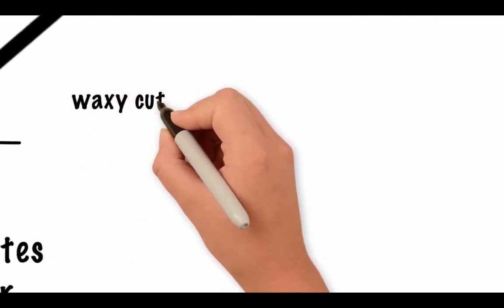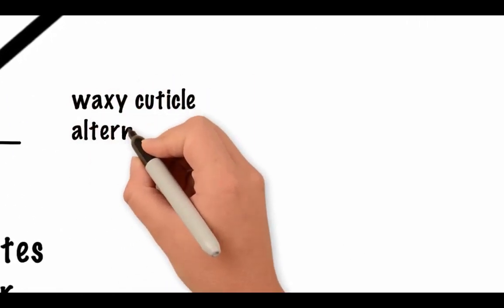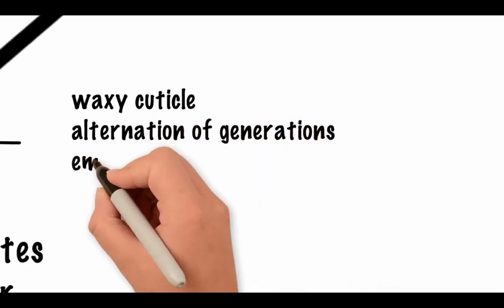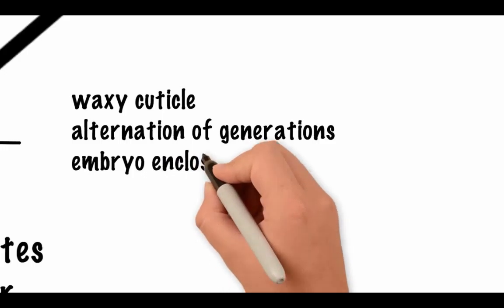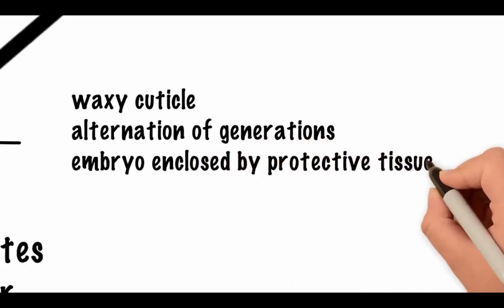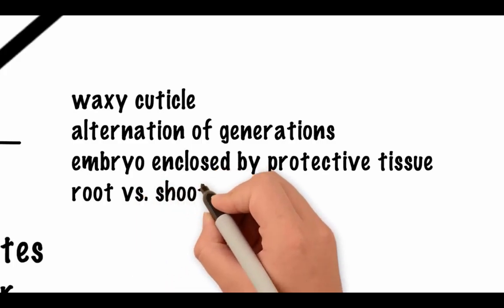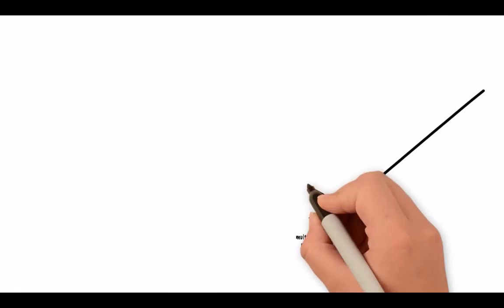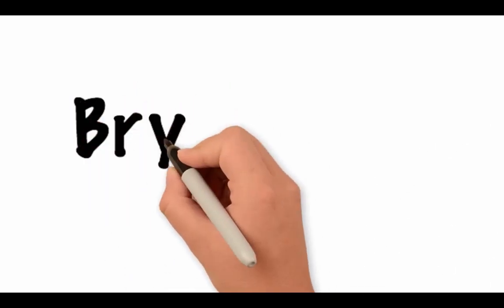That's just a fancy way to say drying out. These adaptations included alternation of generations, which we'll discuss later, embryos enclosed by protective tissue, a separation of the plant body into root and shoot systems, and a waxy cuticle to prevent water loss. The evolution of these traits as terrestrial plants marks the origin of the first land plants, the bryophytes.